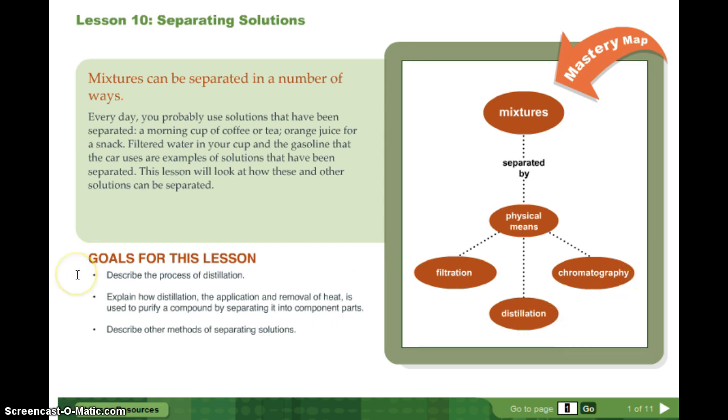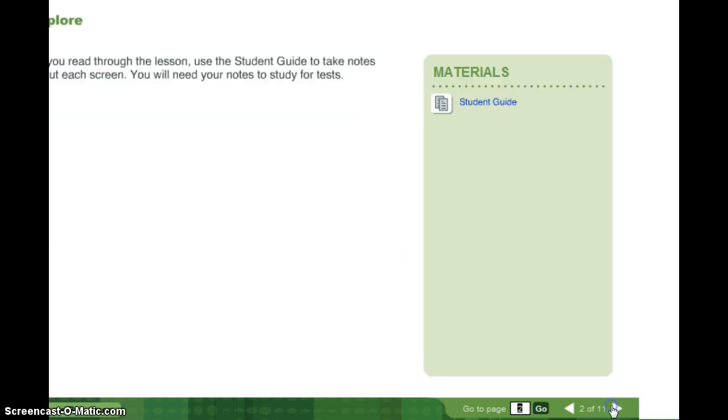Goals for this lesson? Describe the process of distillation. Explain how distillation, the application and removal of heat, is used to purify a compound by separating it into component parts. Describe other methods of separating solutions. And then of course on slide 2 is your student guide that you can download and use if you choose to.